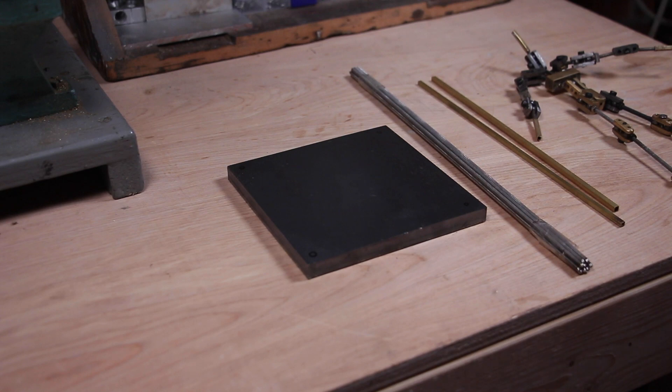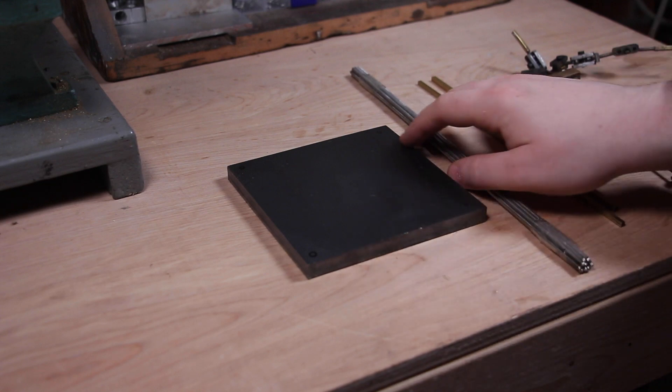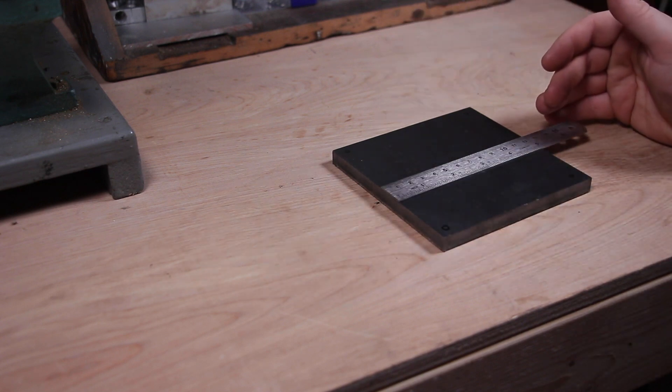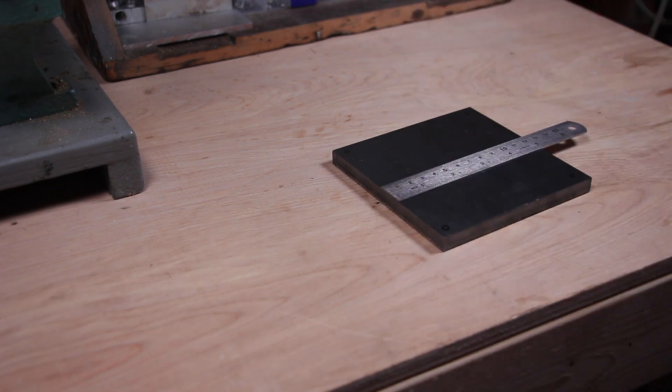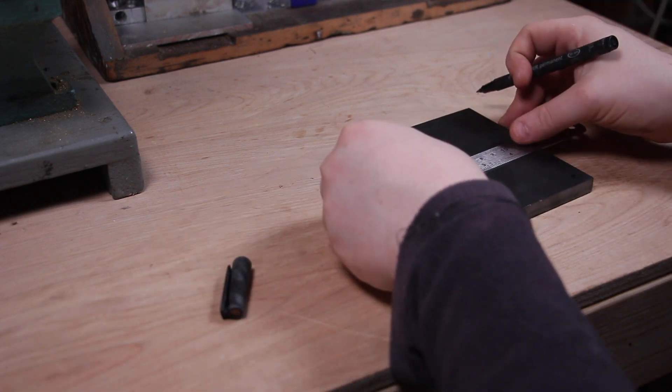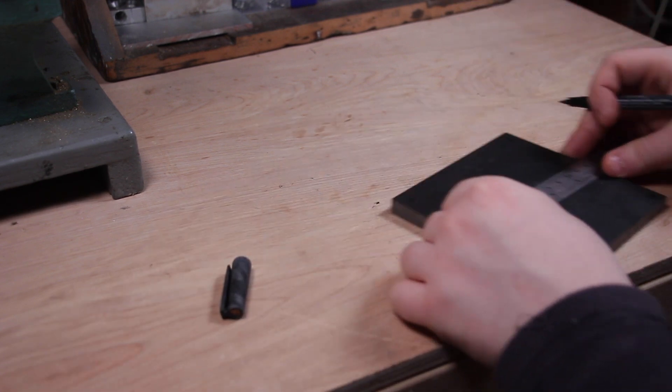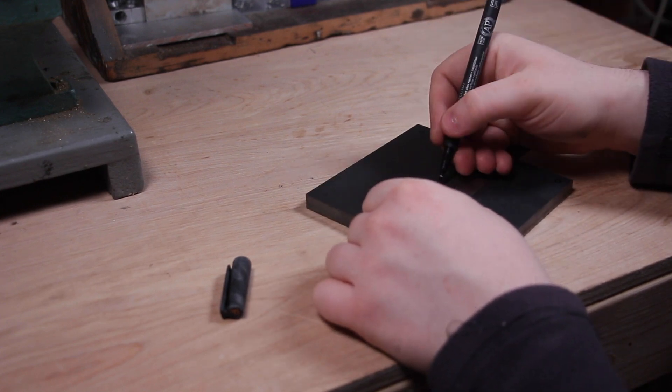We're going to start by tapping a hole in the steel base plate. This is 12.5cm across both ways, so we're going to mark the middle. And then we're just going to go around the other side and mark that.